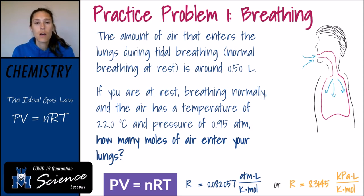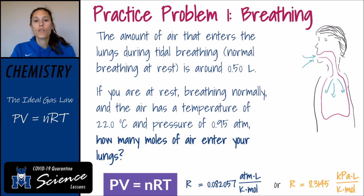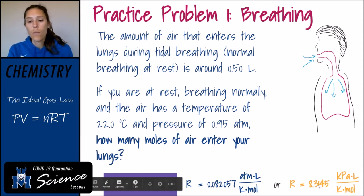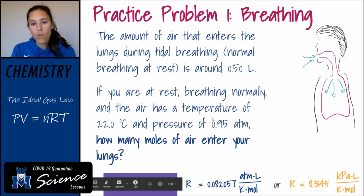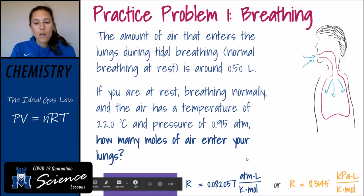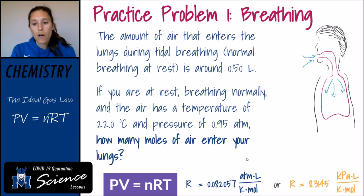The first thing we need to do is identify what numbers we're going to plug in for each variable. In PV equals nRT, I have two choices for R: 0.082057 or 8.3145. Since I'm given a pressure in ATM, let's use 0.082057. We have a volume of 0.5 liters. Our temperature is 22 degrees Celsius, which we need to convert to Kelvin by adding 273.15. And our pressure is 0.95 atmospheres.